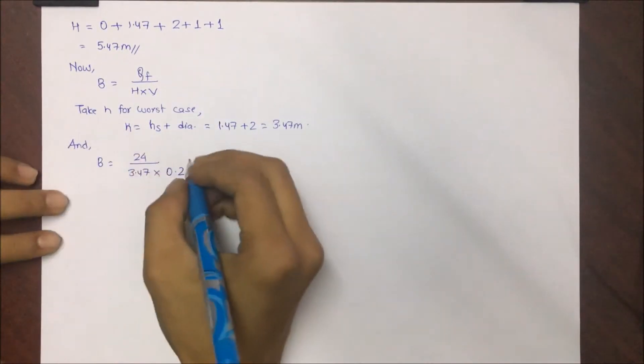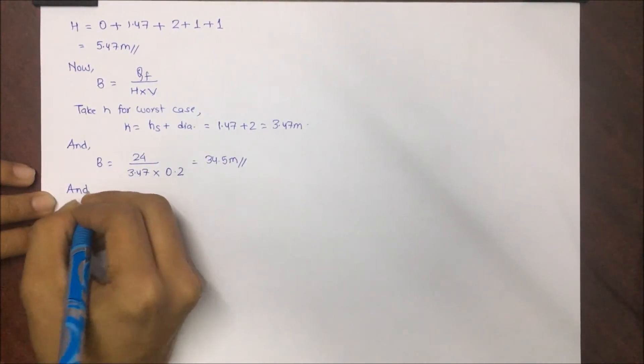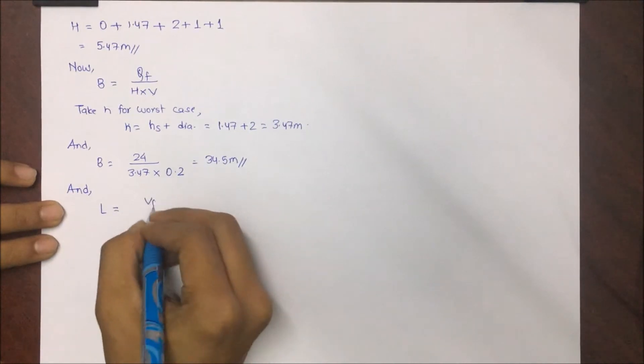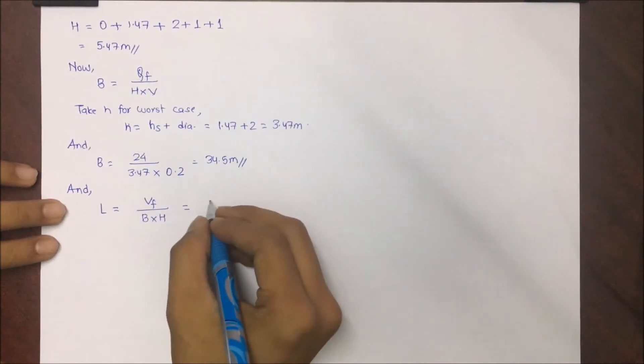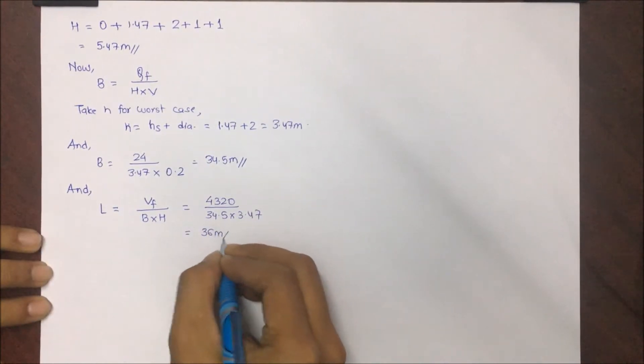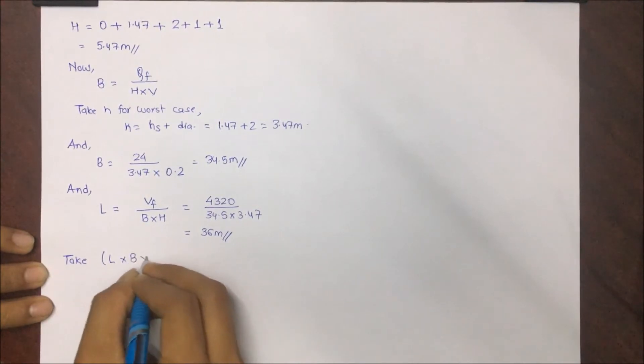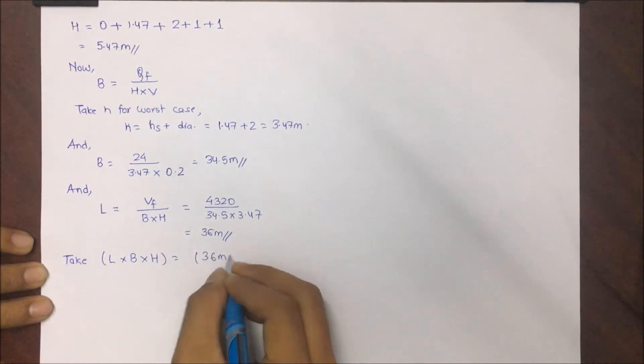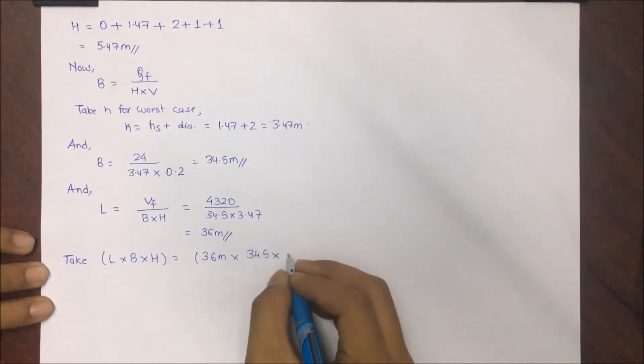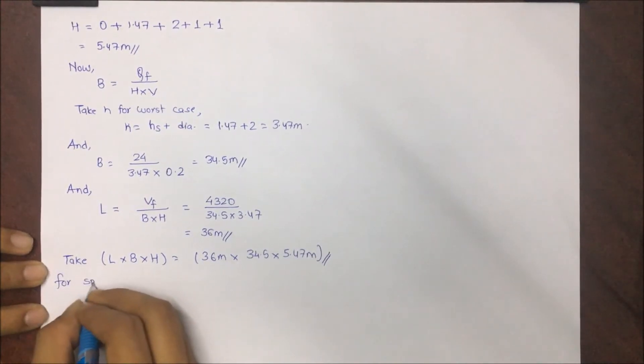For length, it is volume of forebay divided by area B into h. This comes as 4320 divided by 34.5 into 3.47, equals 36 meters. Taking dimension L into B into H as 36 meter into 34.5 meter into 5.47 meter.